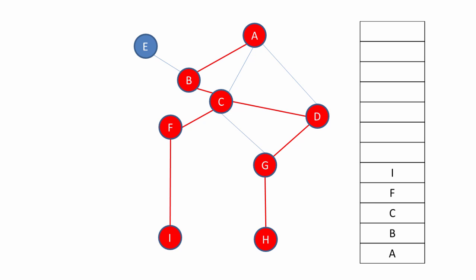Once that path is exhausted, we again start popping vertices from the stack until such time as we find one with unvisited adjacent vertices, in this case B. We have another path to explore. Once that path is exhausted, again we start popping from the stack. Eventually, we'll reach a situation where the stack is empty.